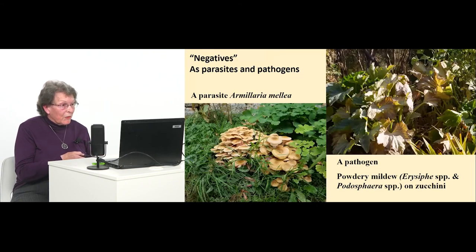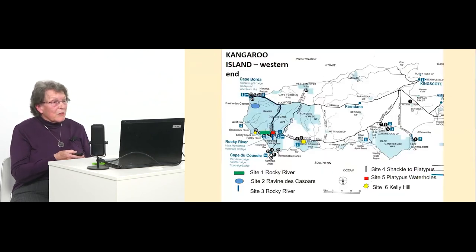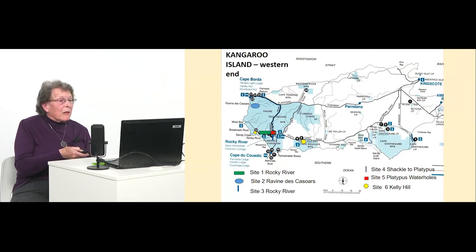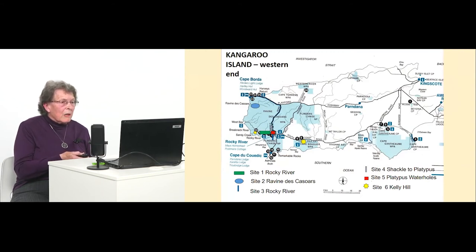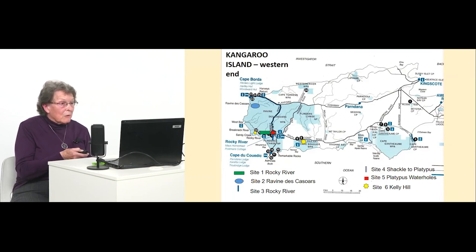Some negatives: parasites like Armillaria — a northern hemisphere species that causes the death of trees — and pathogens like powdery mildew on our zucchini. Some of the work David and I have done is on Kangaroo Island, where we have six sites we've been surveying in detail over about 12 years, including four at Rocky River, a site at Ravine des Casoars, and Kelly Hill Caves — which unfortunately got very badly burnt like the rest of that part of the island in the summer fires.